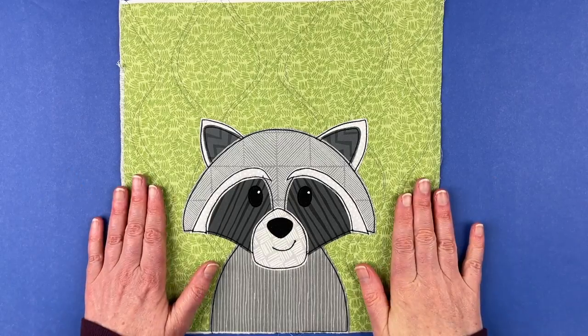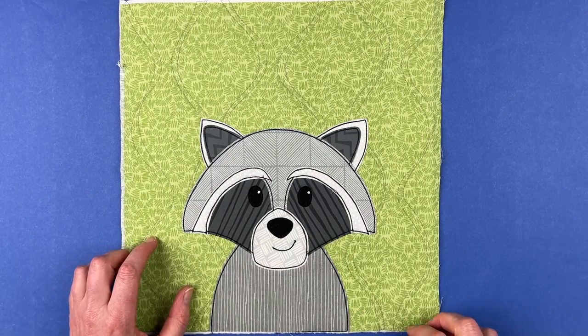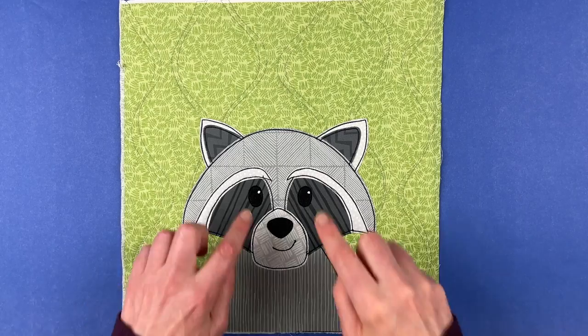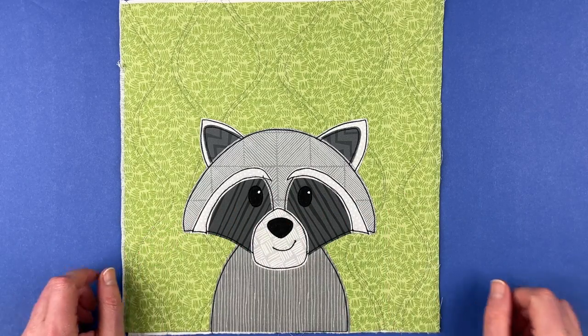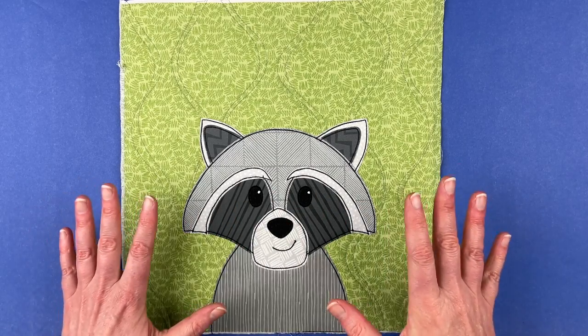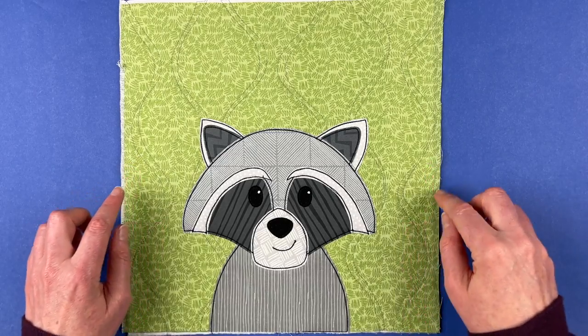And here is the finished block. I've done all of the outline stitching. And I added some catch lights to his eyes. Just a little dot of white fabric paint. And I did another color version too. So first I want to show you this one.